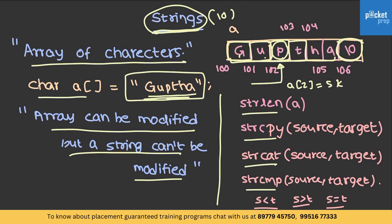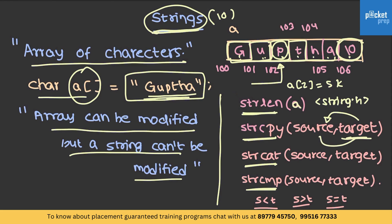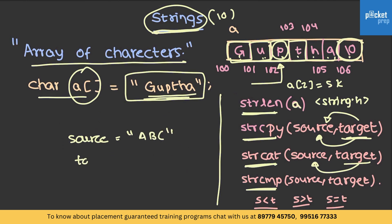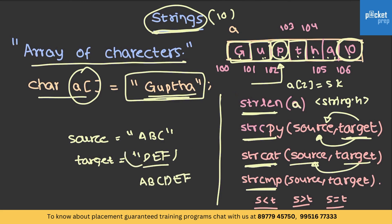There are some library functions related to strings: strlen, strcpy, strcat, and strcmp. All of these are present in the string.h header file. strlen returns the length of the string. strcpy copies a string from target to source. strcat appends the target string to the source string — for example, if source is 'abc' and target is 'def', after strcat the source becomes 'abcdef'. strcmp compares two strings character by character: it returns zero if both are equal, a positive value if the source ASCII value is greater, or a negative value accordingly.